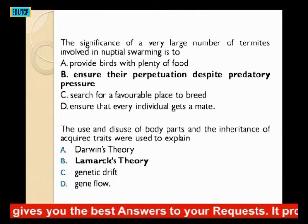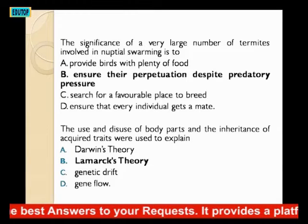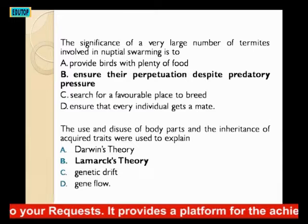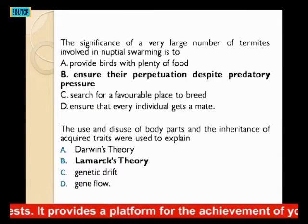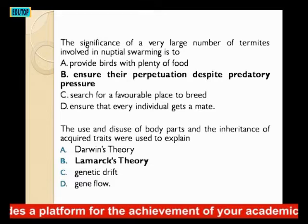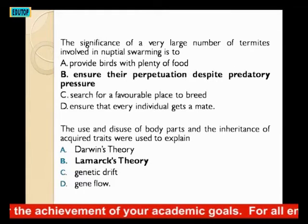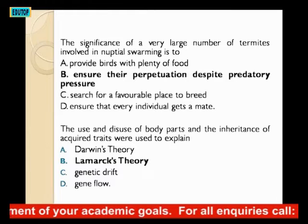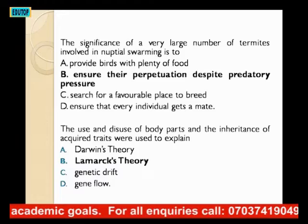The significance of a very large number of termites involved in nuptial swarming is to do what? A: provide birds with plenty of food; B: ensure their perpetuation despite predatory pressure; C: seek a favorable place to breed; D: ensure that every individual gets a mate. They go to another colony entirely, and that ensures that no matter the predatory pressure they face, they can continue in another place. The answer is B.